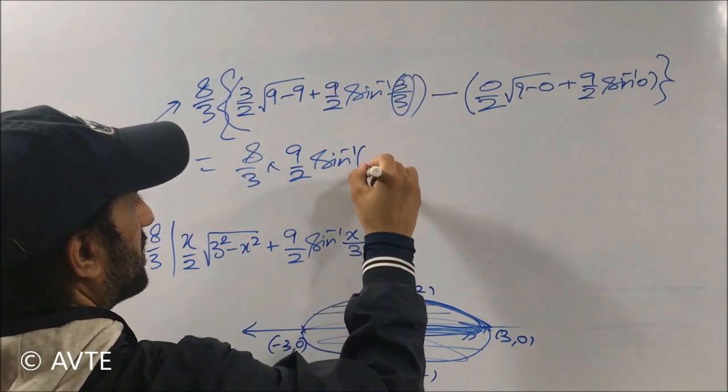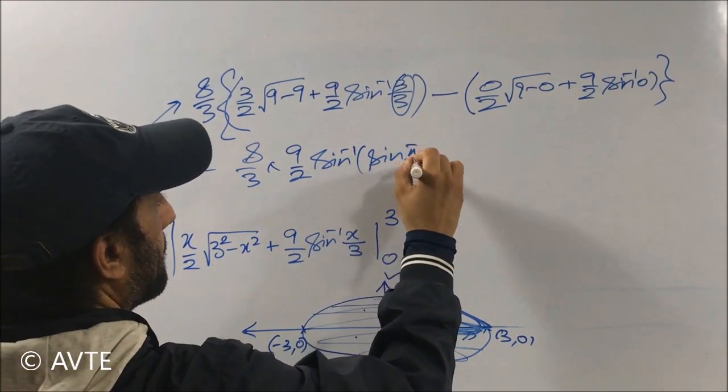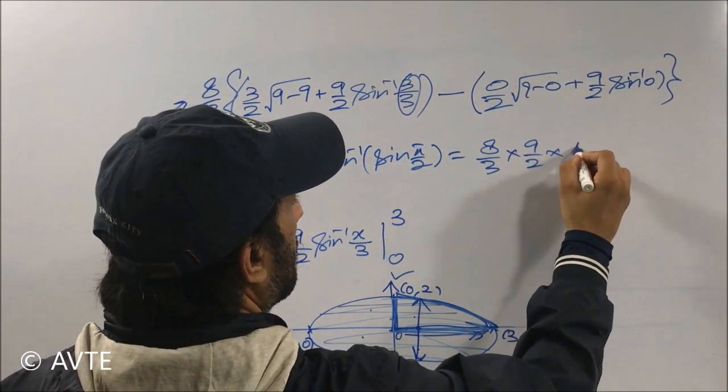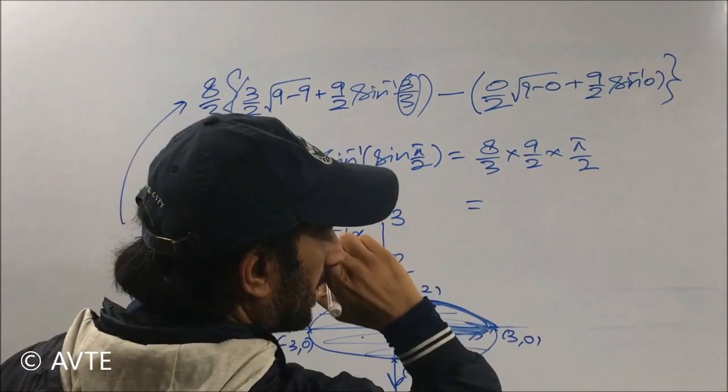This is sine inverse of 1, which is sine pi by 2.